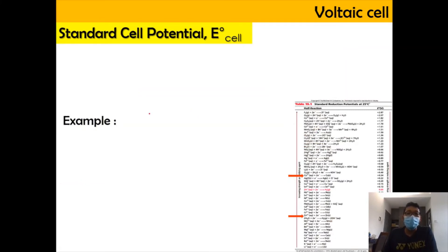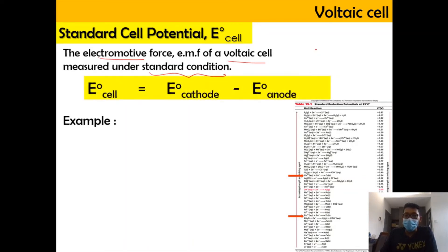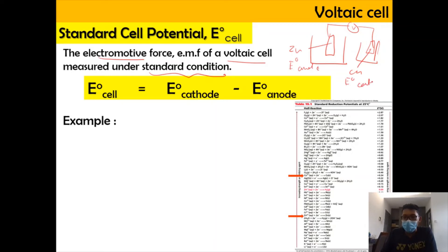Now let's look at the standard cell potential. The standard cell potential is the electromotive force of a voltaic cell measured under standard conditions. It is calculated using: E⁰cell = E⁰cathode − E⁰anode, where both values are taken from the standard reduction potential (SRP) table — so both must be expressed as reduction potentials.